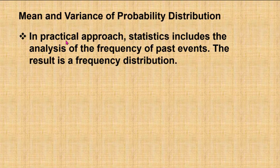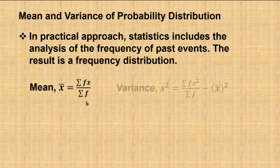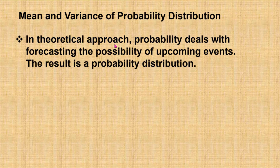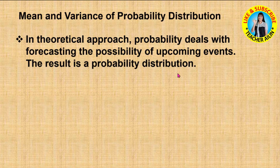In a practical approach, statistics is related to the analysis of the frequency of past events. The result is a frequency distribution. From the frequency distribution, we can find the mean and variance of the data by using suitable formulas. In a theoretical approach, probability is related to forecasting the possibility of upcoming events where the events have not yet happened. The result is a probability distribution.